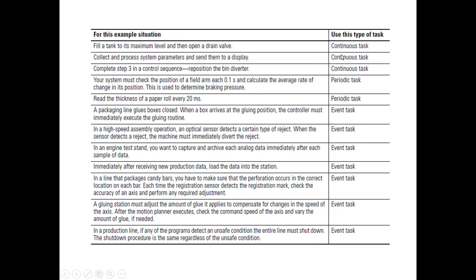Now that you've got that, here are some types of tasks you might want to use. You want to fill a tank to its maximum level and then drain — that's continuous, just ladder logic and there you go. For high-speed applications, a sensor detects a reject — when it detects it, you diverge. Maybe you have a limit switch tied to an event; it would stop running the continuous task and run the event task to get a reject, then go back to continuous. These are some examples of periodic tasks — for instance, read once every 20 seconds on a timer: stop continuous, run this task, then keep going. Every 20 seconds the continuous stops, the periodic runs, then back to continuous.